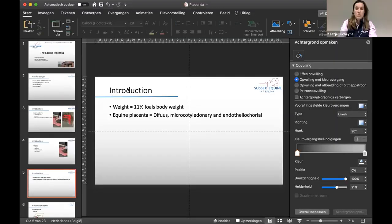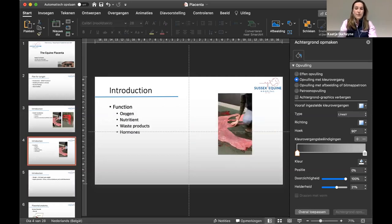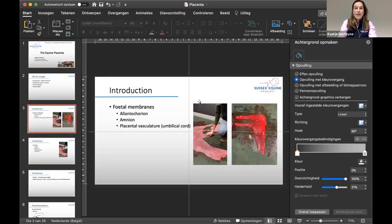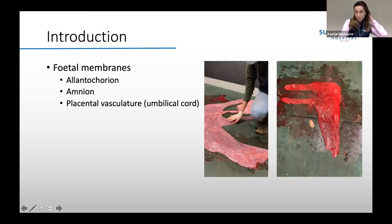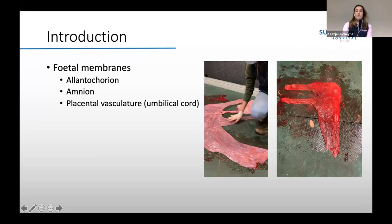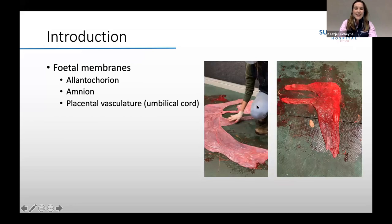On the left you can see the allantois and on the right the chorion, and here at the back you have the amnion with the umbilical cord.